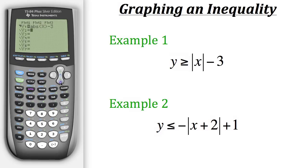So we'll go down to y2 and then put in negative absolute value and then x plus 2 and then close the parentheses because that's the end of the absolute value expression. And then add 1 to it.